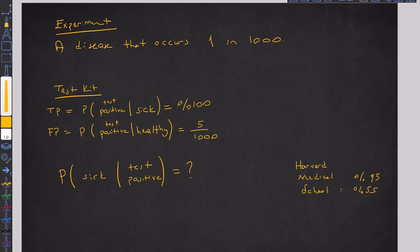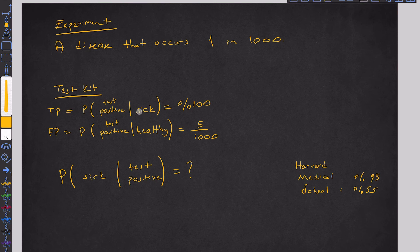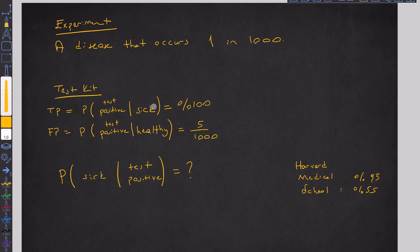These are the accuracy metrics of the test kit. Let me show it to you. What is true positive? True positive: if a person is sick, then your test kit's probability to give a positive result for that person is 100%. Did you see the accuracy? Incredible, right? Think about a thousand sick people — we give them all our new test, and all thousand results come back positive. So 100%. That's the true positive rate.